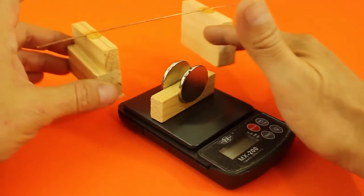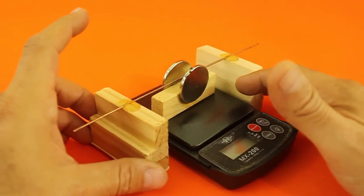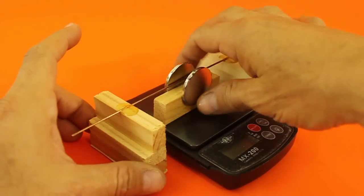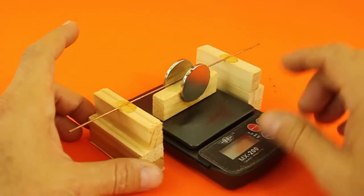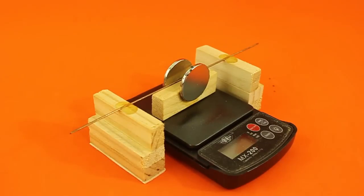And when we put the conductor in the middle of the magnets, it does not touch the magnets nor the wooden base or the scale.